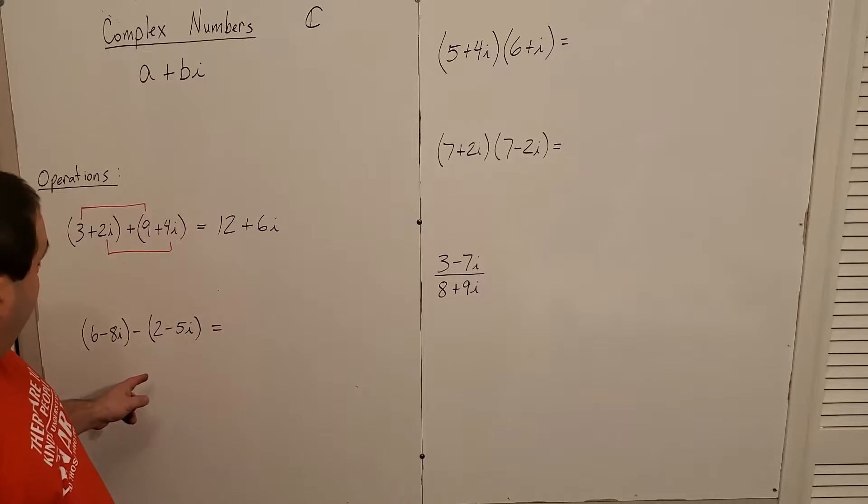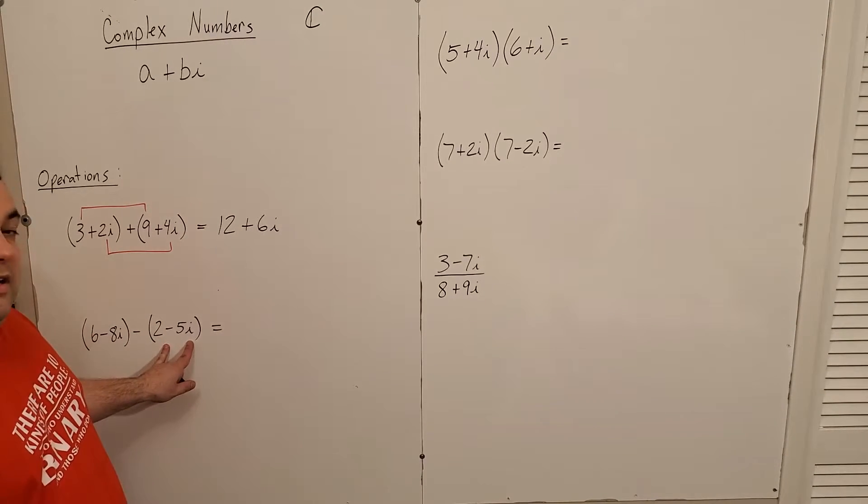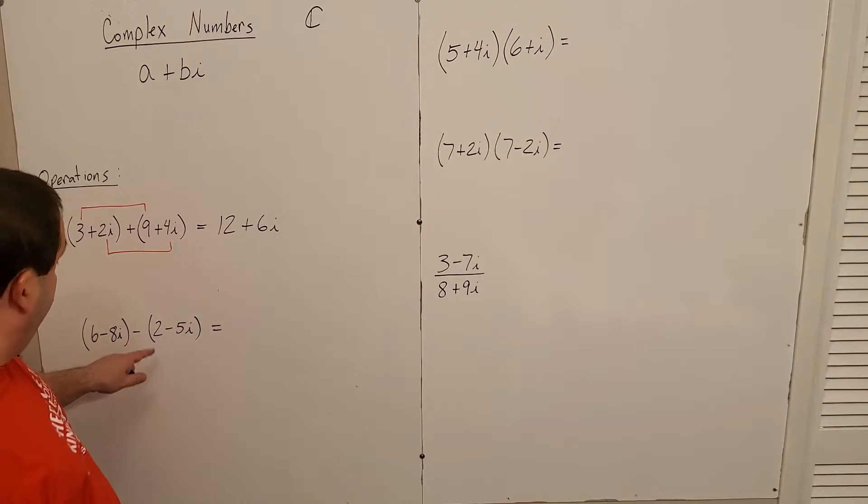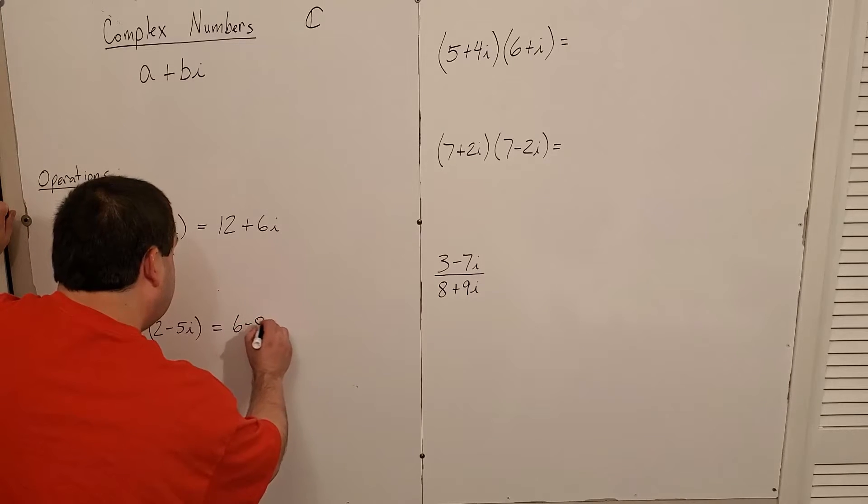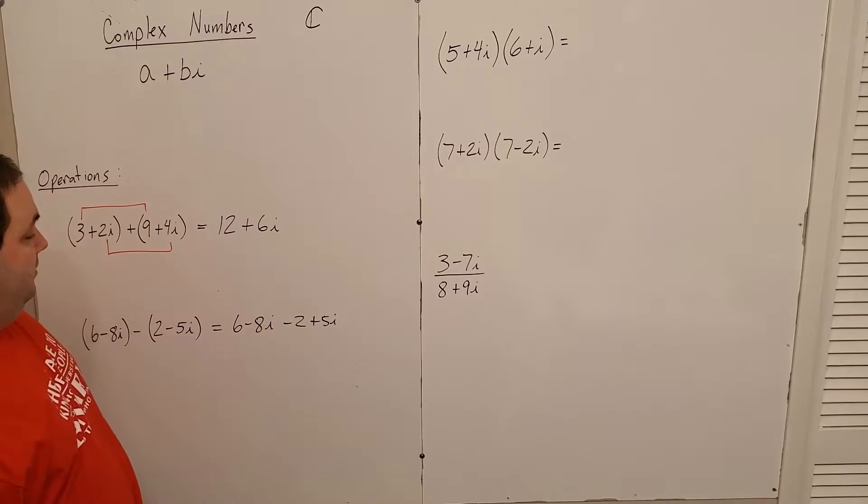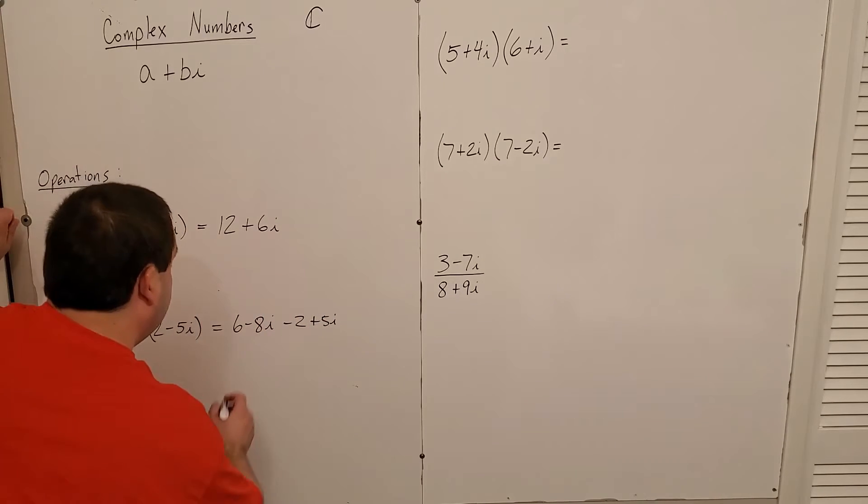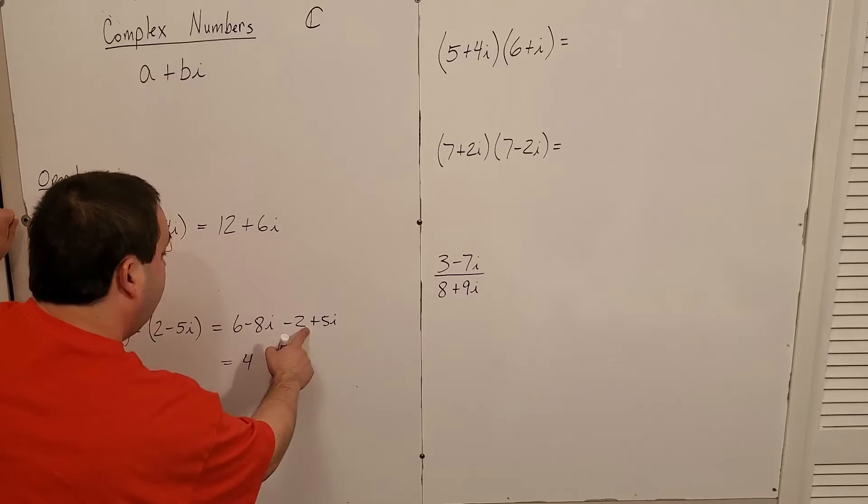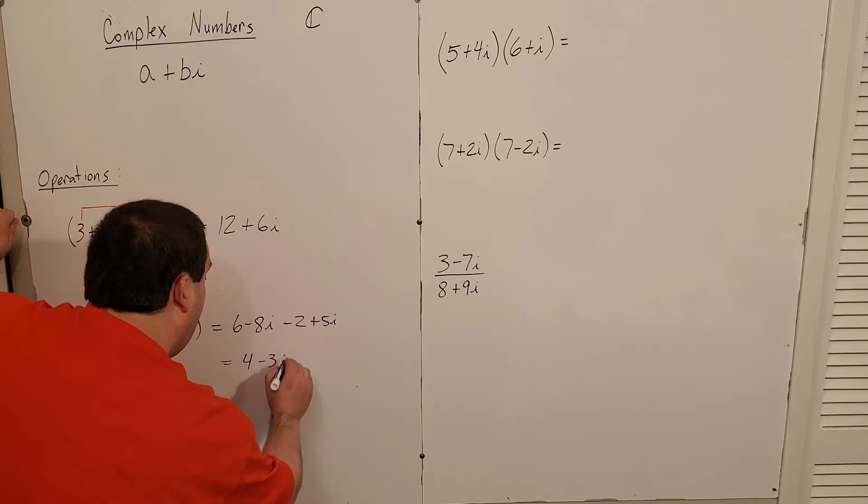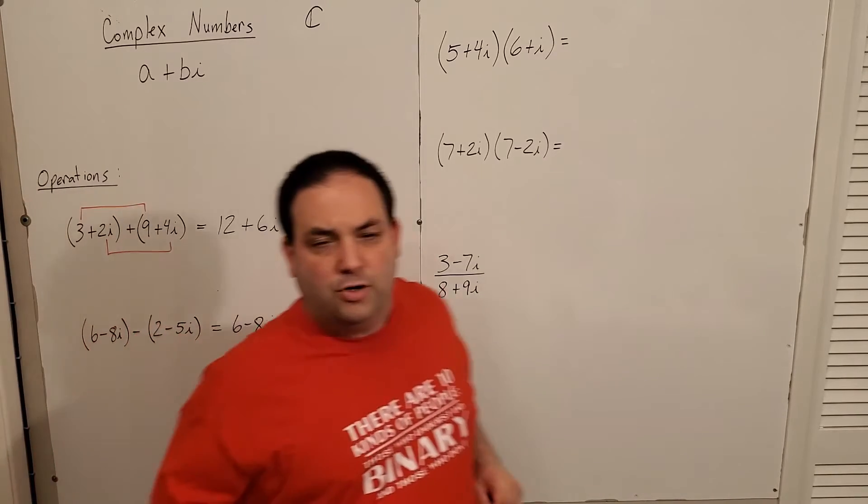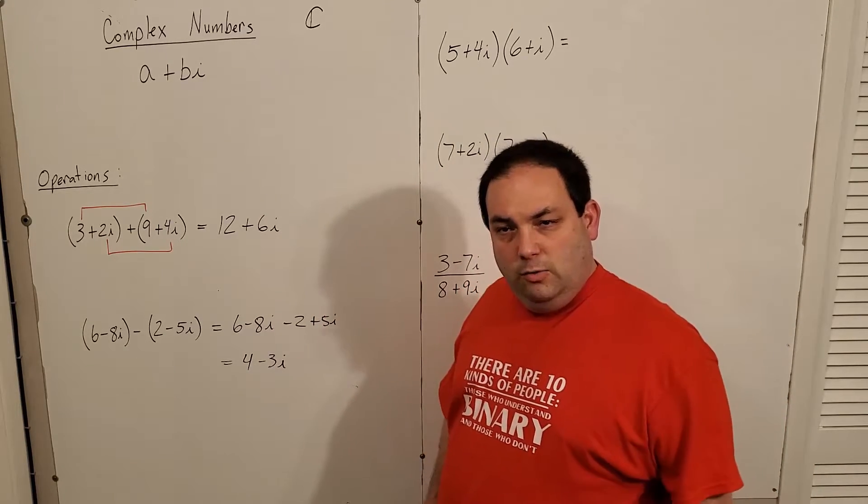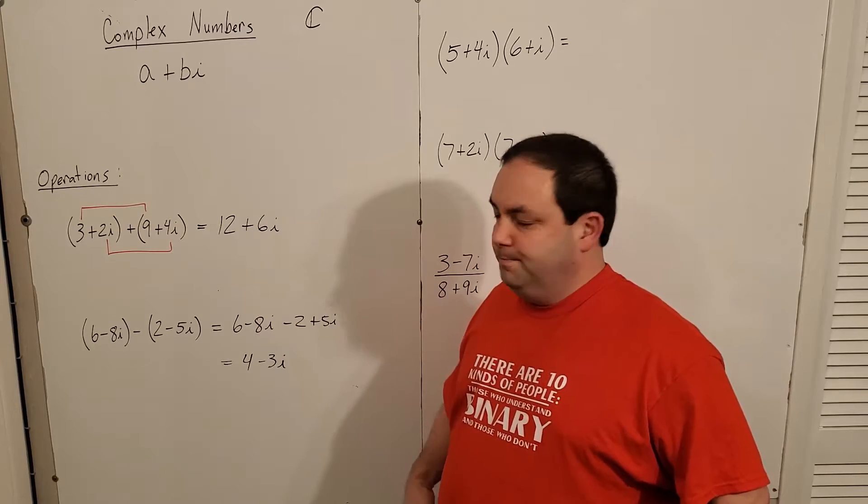Subtraction is not that much different, but you have to be careful because a complex number does have two pieces, so the negative sign actually has to apply to both. So what I have here is six minus eight i minus two plus five i, and then combine like terms. Six minus two is four, and negative eight i plus five i is negative three i. So addition and subtraction pretty straightforward.